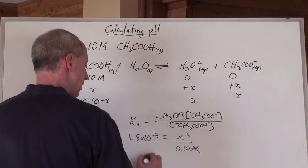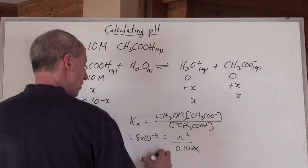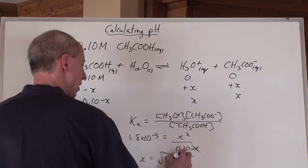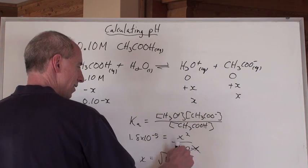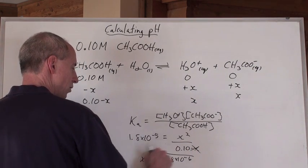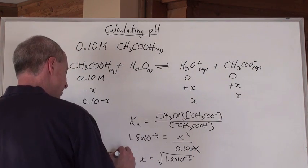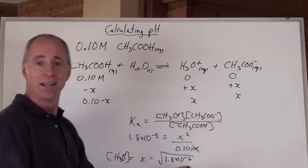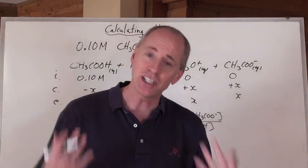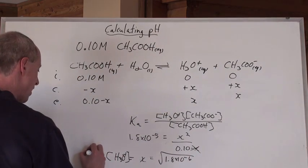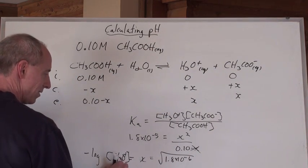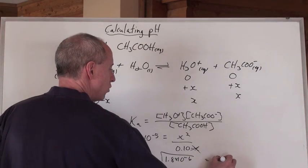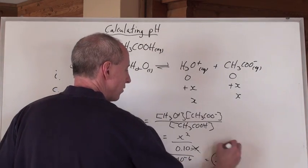When you calculate here for X, X is going to equal the square root of, are you with me, 1.8 times 10 to the negative 6. Because that times that is 10 to the negative 6. Take the square root of that, that's X. But what is X? X is the hydronium ion concentration. It's that. And so now, all you have to do is take the negative log of that, right? So the negative log of that number there, and you're going to get 2.87, and that's the pH.